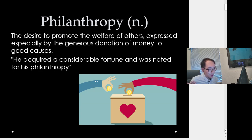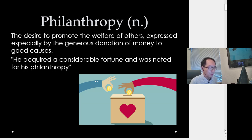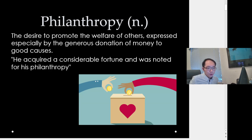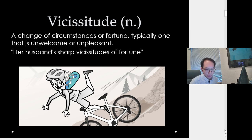The first word is philanthropy — the desire to promote the welfare of others, expressed especially by the generous donation of money to good causes. When you give to charity, you're kind of a philanthropist, someone who donates for the welfare of others. Example sentence: 'He acquired a considerable fortune and was noted for his philanthropy.' The next word is vicissitude — a change of circumstances or fortune, typically one that is unwelcome or unpleasant.